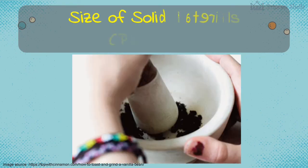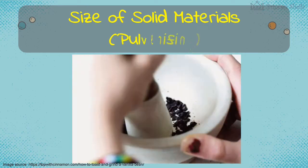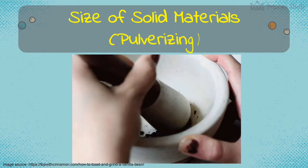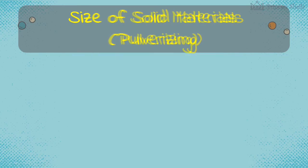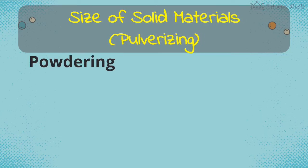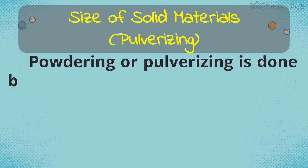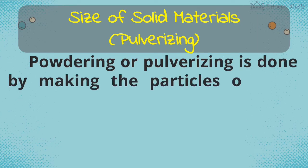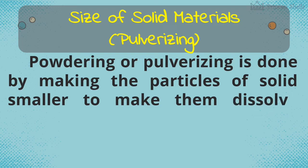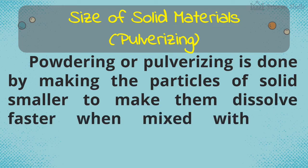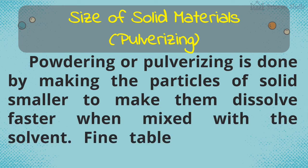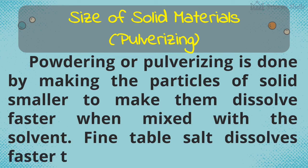The third factor is the size of solid materials. Powdering or pulverizing is done by making the particles of solids smaller to make them dissolve faster when mixed with the solvent. For example, fine table salt dissolves faster than rock salt.